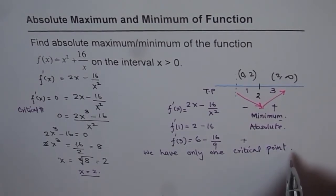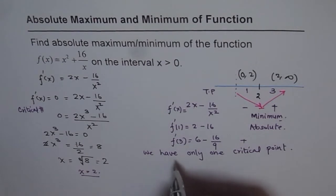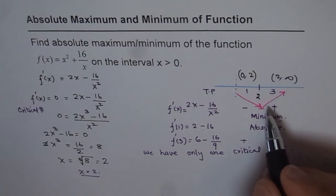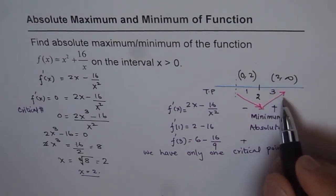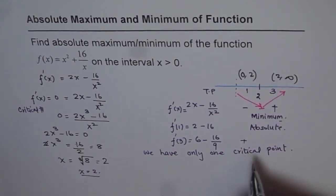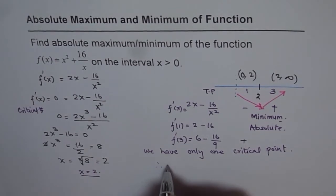What we see is that f'(x) is negative for values less than that critical point. It is positive afterwards and therefore it is a minimum. Since there is only one critical point, it follows that this is absolute minimum, and therefore our answer is: